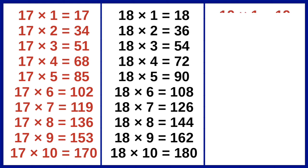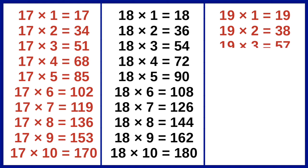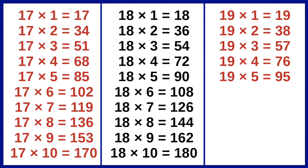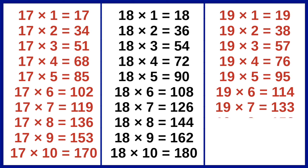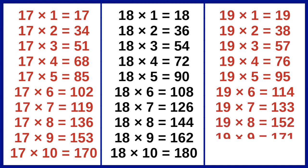19×1=19, 19×2=38, 19×3=57, 19×4=76, 19×5=95, 19×6=114, 19×7=133, 19×8=152, 19×9=171, 19×10=190.